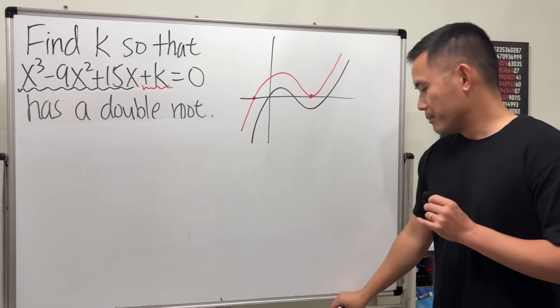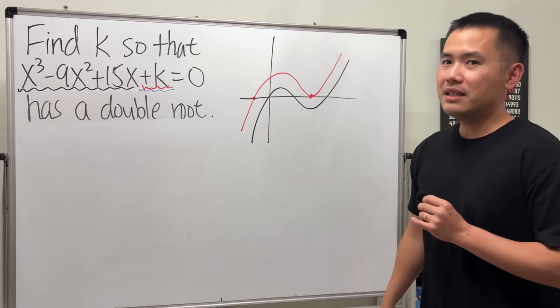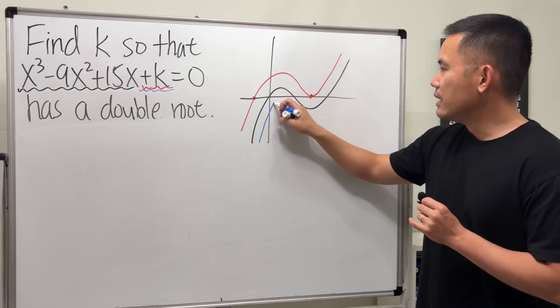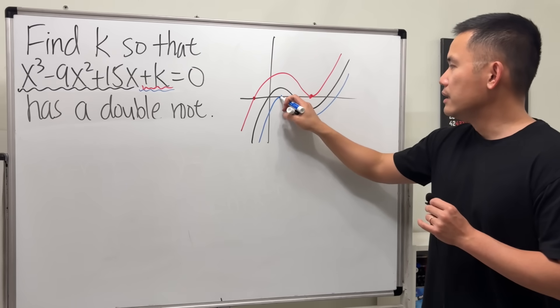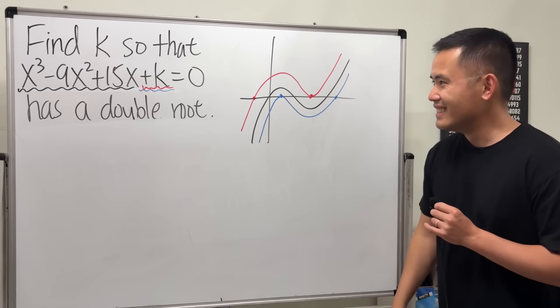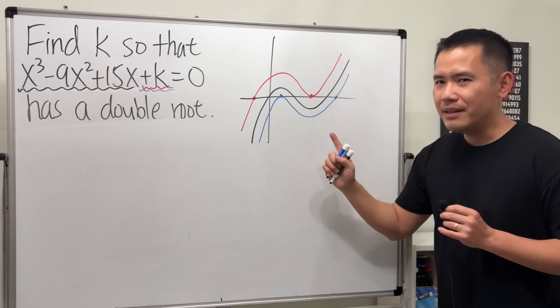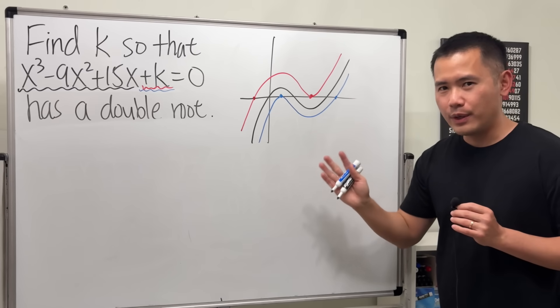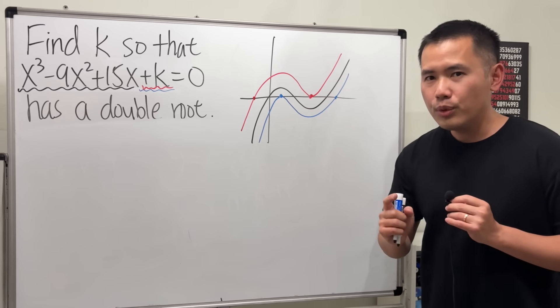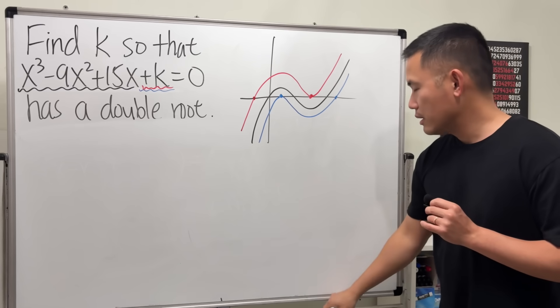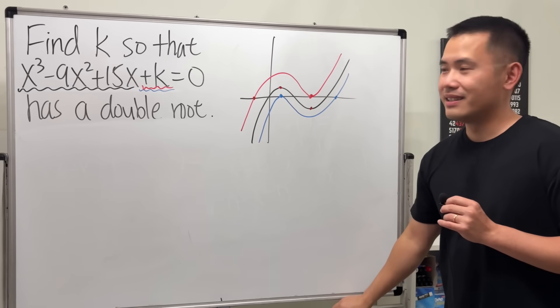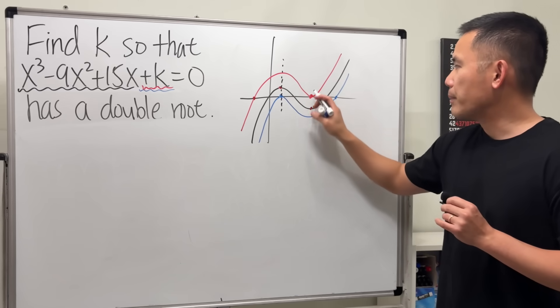Because this way, this will be the double root and then this will just be that regular root. Perhaps k could also be negative, in that case I want to shift this down so many times so that the graph will look like this. This would be the double root and that is just that individual single root.